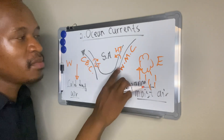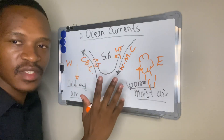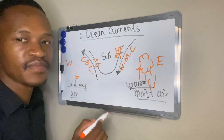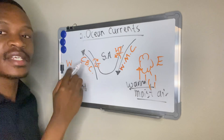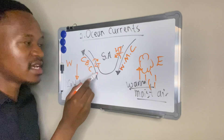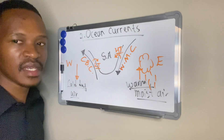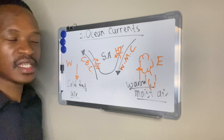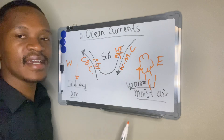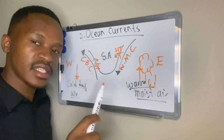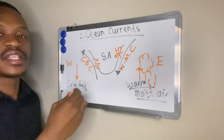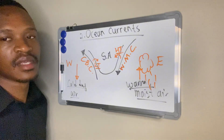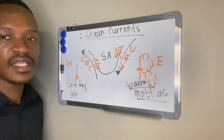To summarize: the warm Mozambique current brings warm, moist air to the east coast, hence we have high temperatures. The cold Benguela current brings cold, dry air to the west coast, hence we have low temperatures. On the east coast, warm moist air rises, cools, and condenses to form clouds, bringing more rainfall. On the west coast, cold dry air sinks, resulting in less cloud formation and less rainfall.